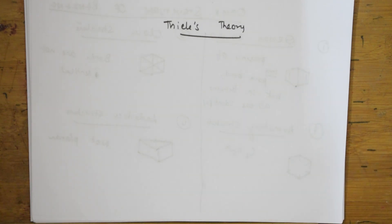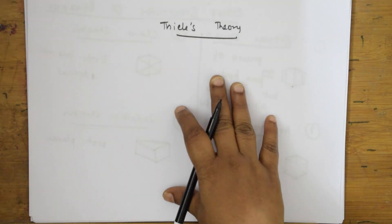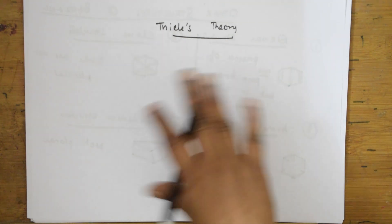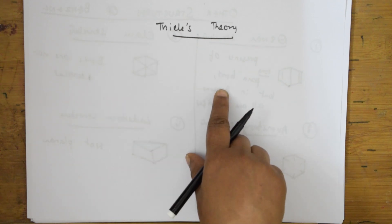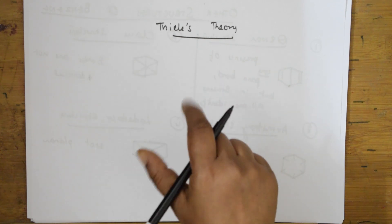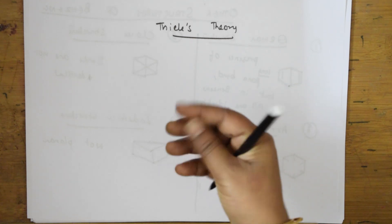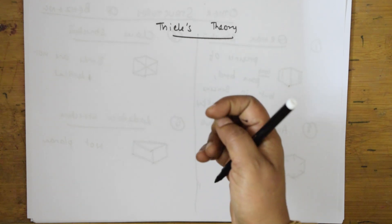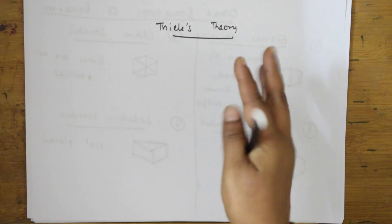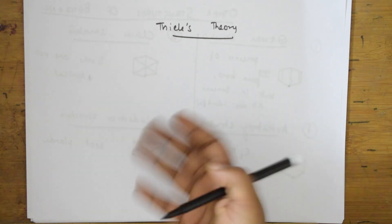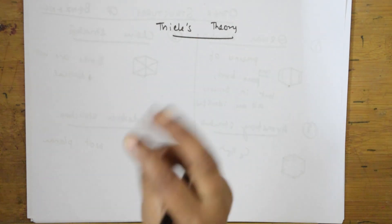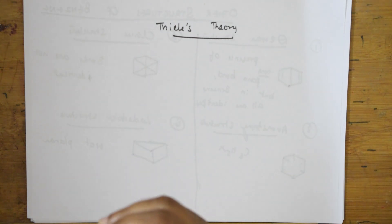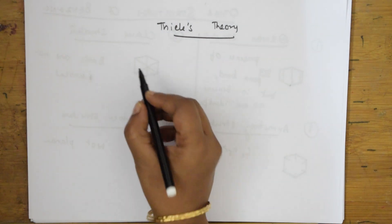Then came one more theory proposed by Thiele. He proposed a structure for benzene. What did he say? He said that free valences — whatever three pi bonds are there — three free valences of neighboring carbons interact with each other. He said these valences are going to interact and they can neutralize each other. Let's draw that structure.